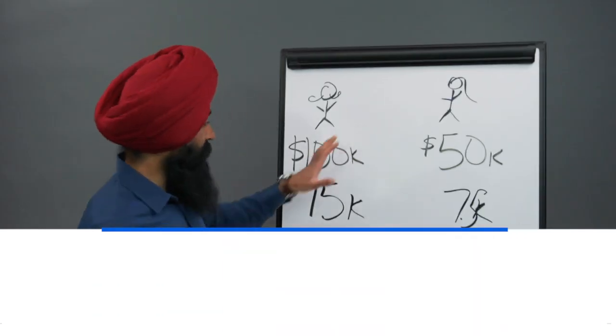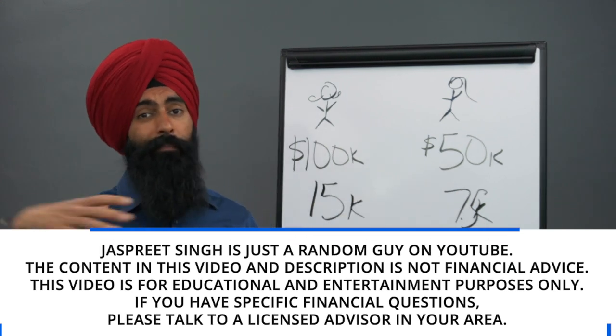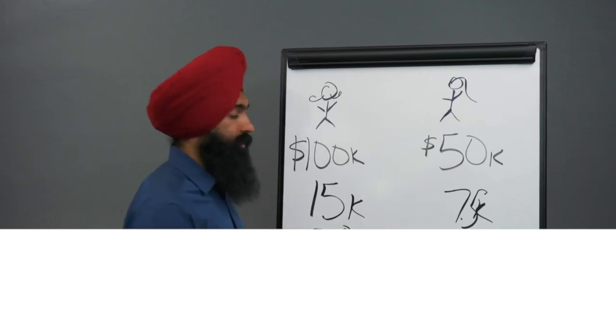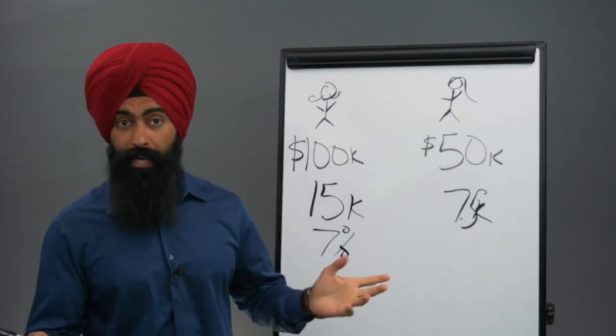See, the difference between cousin Bunty and Paramjit is that cousin Bunty just gave his money to a money manager and he was able to get a 7% average rate of return on his money after all fees. Not bad.